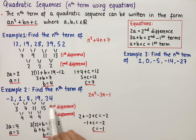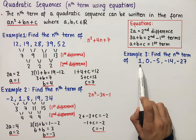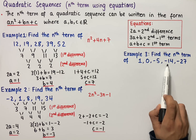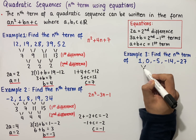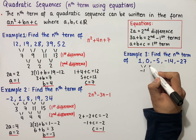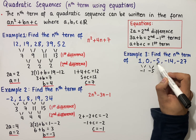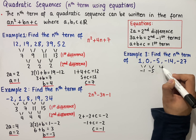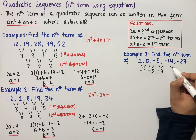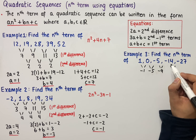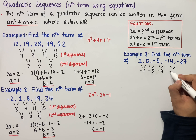The final example says find the nth term of 1, 0, minus 5, minus 14 and minus 27. We start by working out the first difference: 0 minus 1 which is minus 1; minus 5 minus 0 which is minus 5; minus 14 minus minus 5, the same as minus 14 plus 5, which equals minus 9; and minus 27 minus minus 14, the same as minus 27 plus 14, which is minus 13.